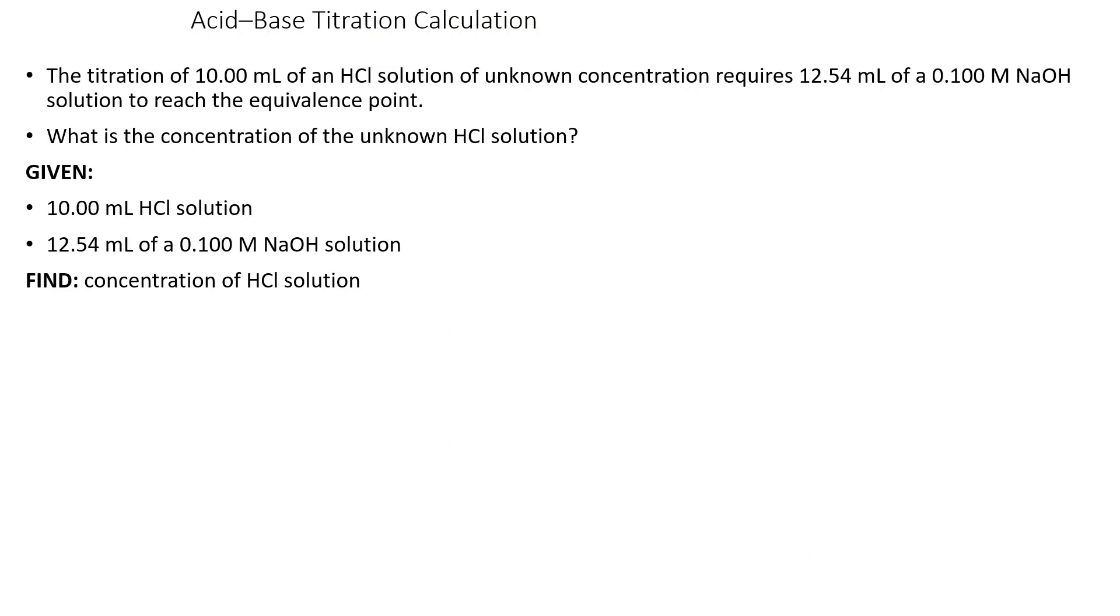All right, so an acid-base titration calculation. You've done these too in the last chapter, but just to review it real quick. The titration of 10 milliliters of HCl of unknown concentration required 12.54 milliliters of a 0.1 molar NaOH solution to reach the equivalence point. What is the concentration of the unknown HCl? First thing I have to do is write a chemical reaction to see how they're related to each other. So I have HCl plus NaOH, and that's going to make NaCl plus H2O.